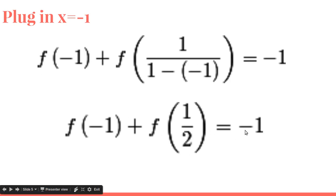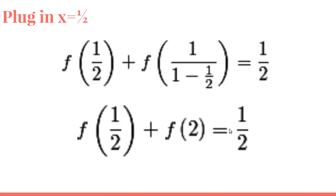So now we need to find f(1/2). So you plug in 1/2. f(1/2) plus f of, this simplifies to f(2) equals 1/2. So now we've gotten back to f(2). How did I know that was going to happen?